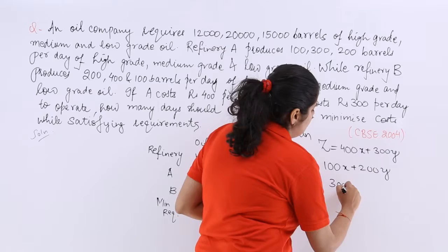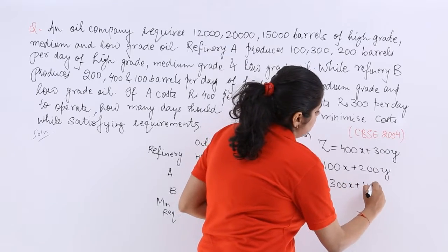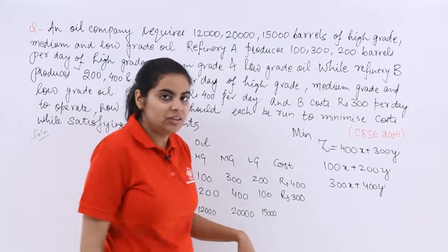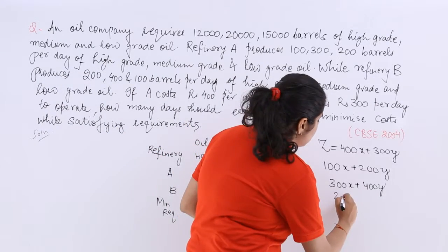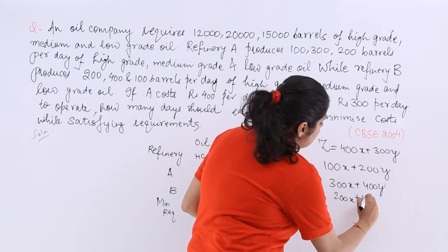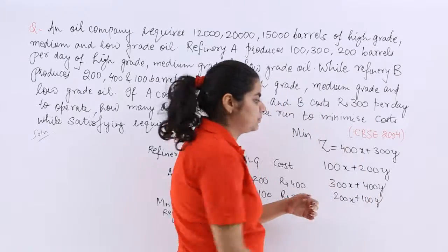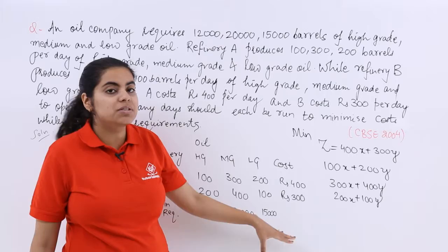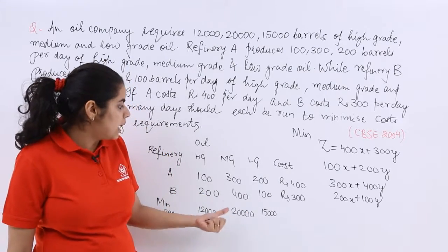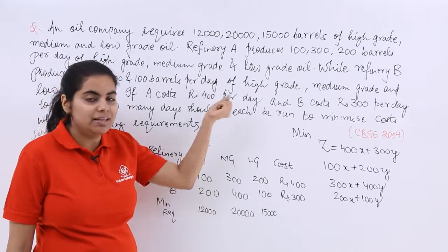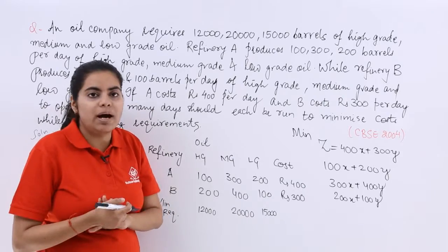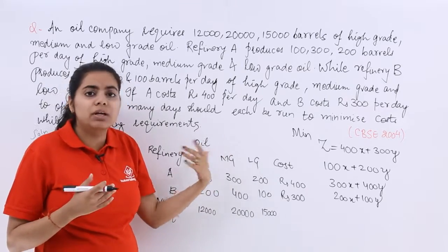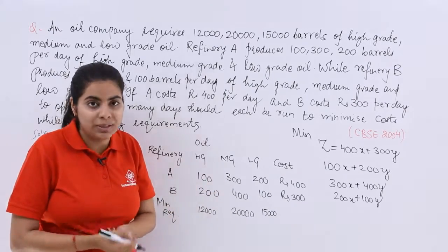The next will have 300 and 400. So it will be 300x plus 400y. And the next would be 200 and 100. So it is 200x plus 100y. Right? Now here is 12,000, 20,000, 15,000. I also have into picture this is high grade and that is the requirement. So the requirement for high grade is this much. So either we should have greater than equal to or less than equal to that you have to know.